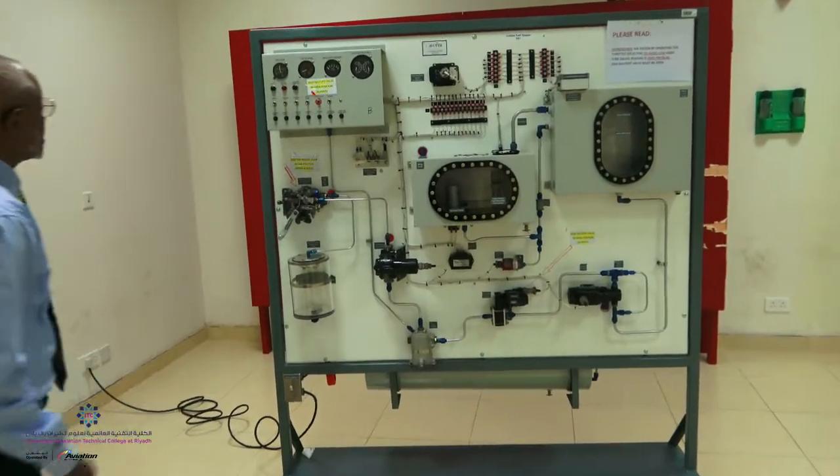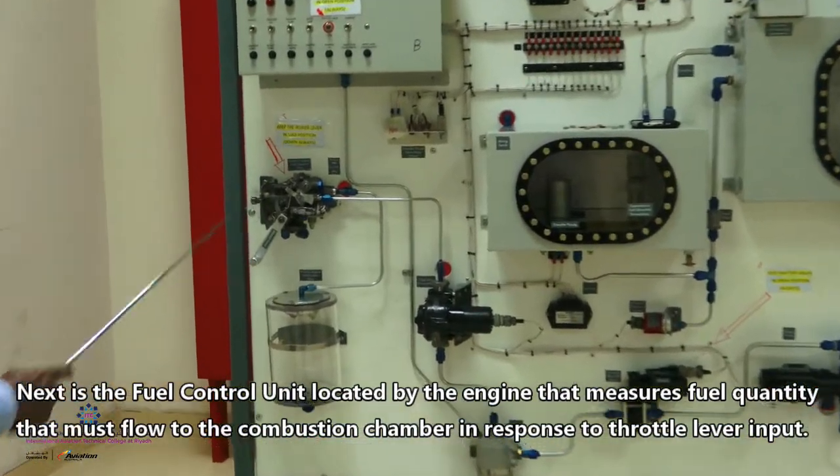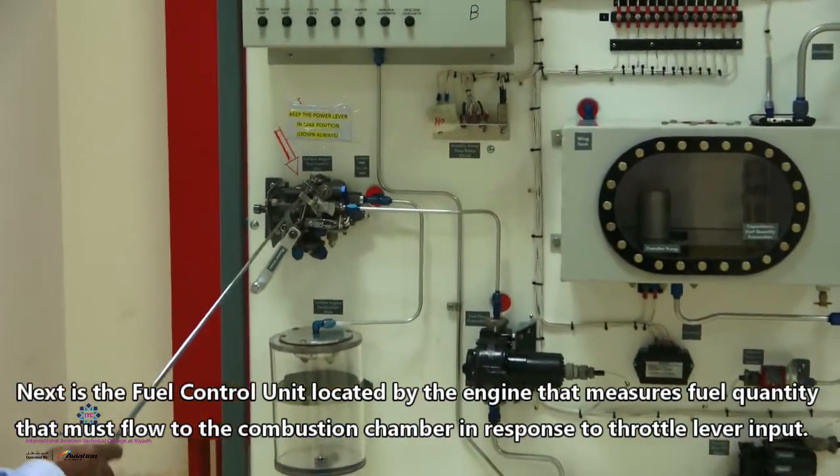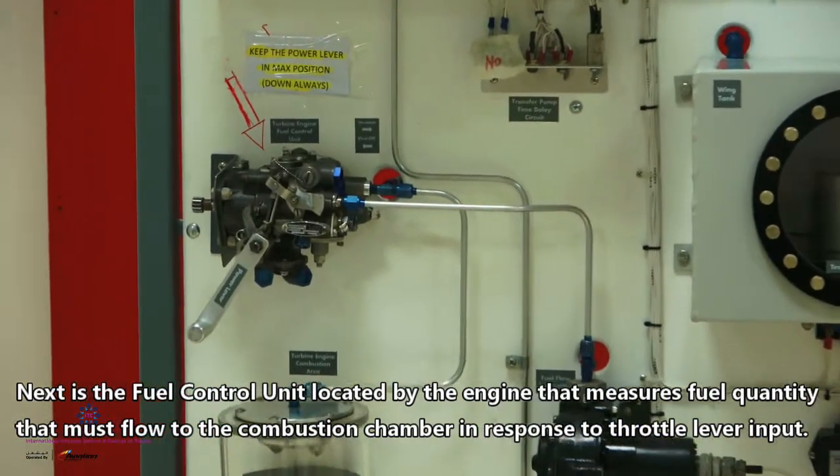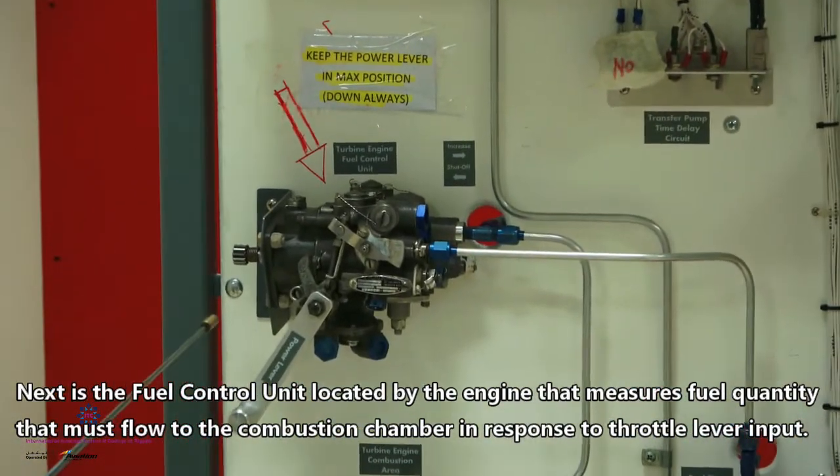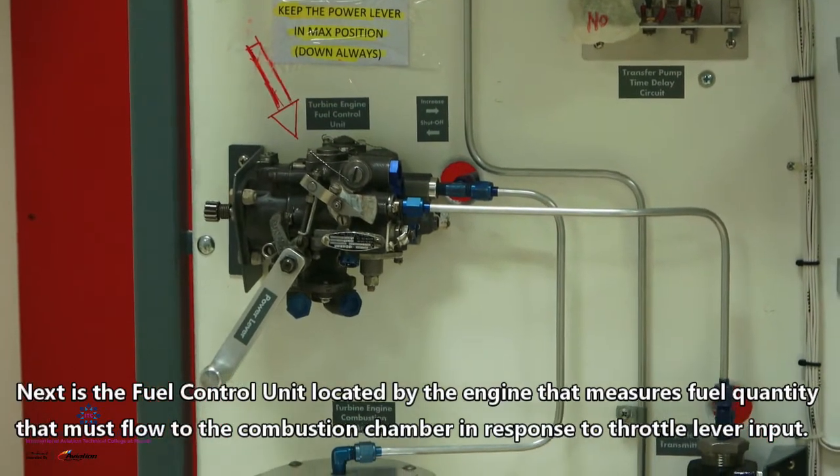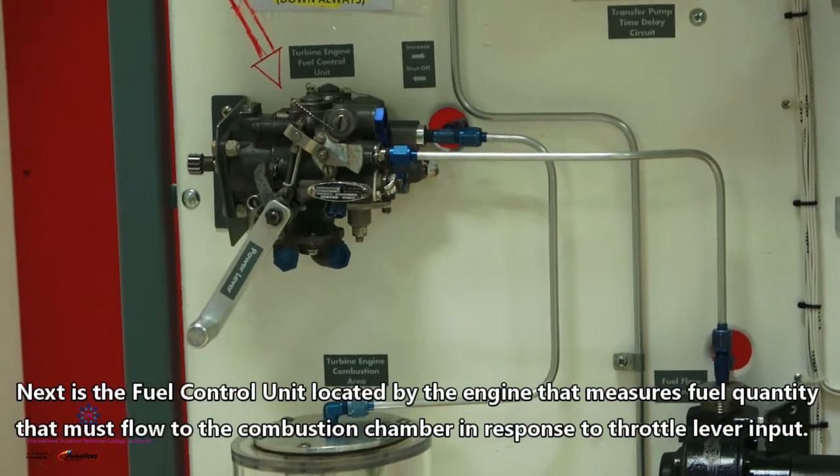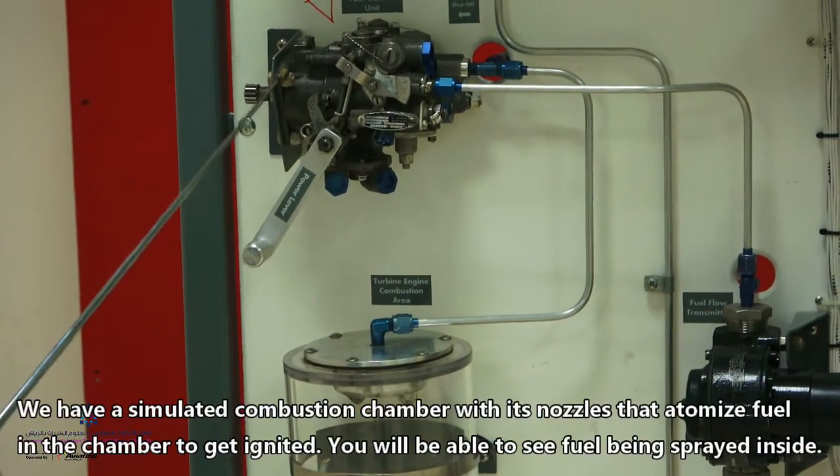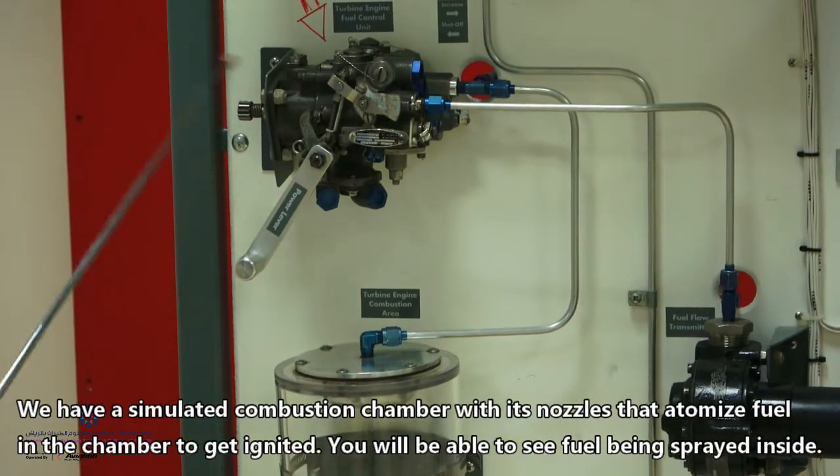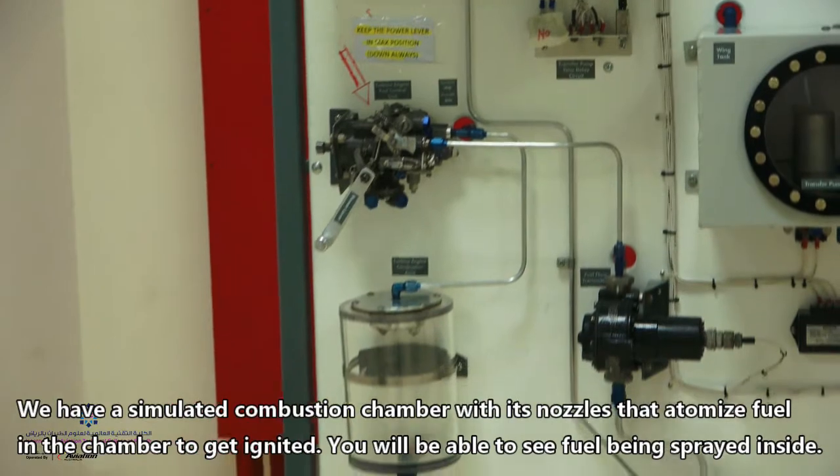Next we have here is a fuel control unit. The fuel control unit is located by the engine and then it is connected to a lever. This power lever is located in the cockpit. This power lever is controlled by the captain to increase or decrease his thrust according to the requirement of his flight.